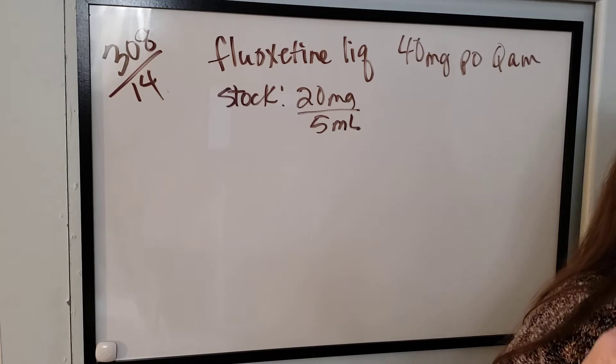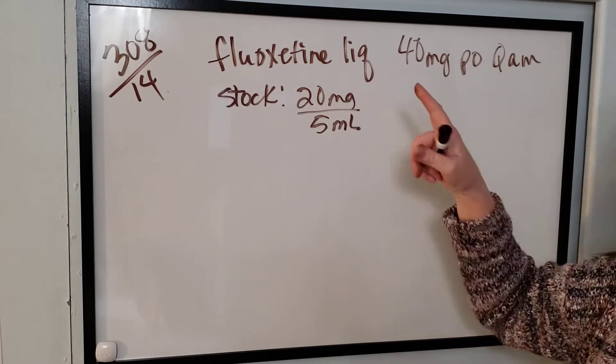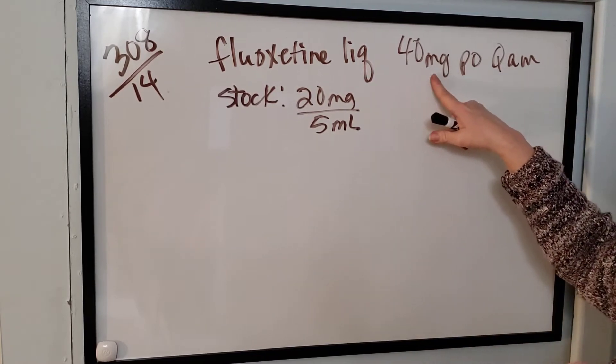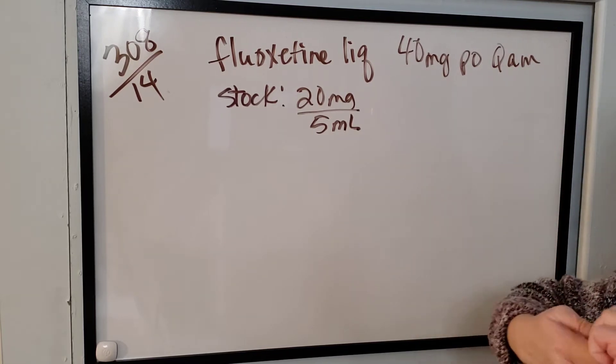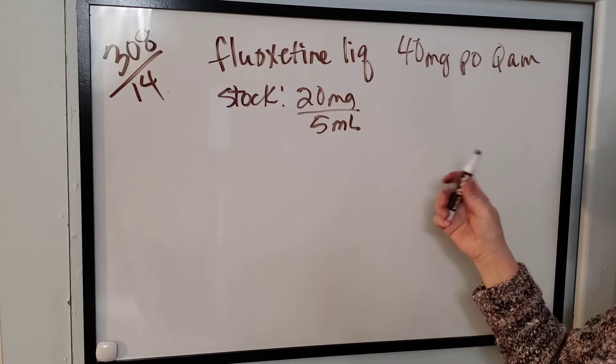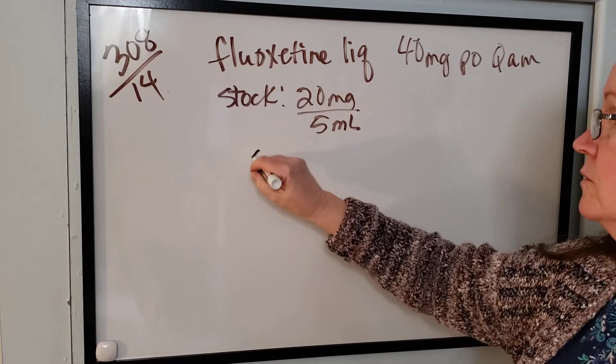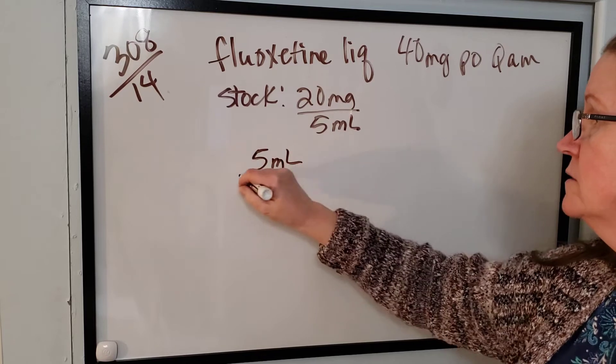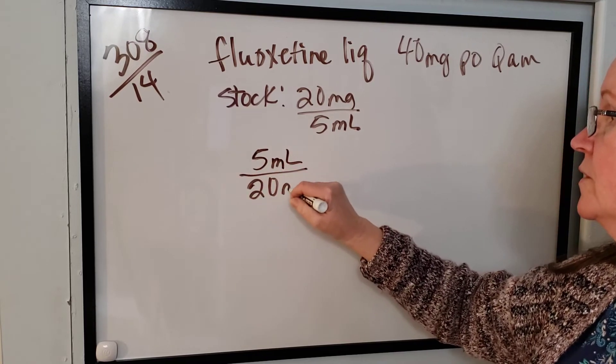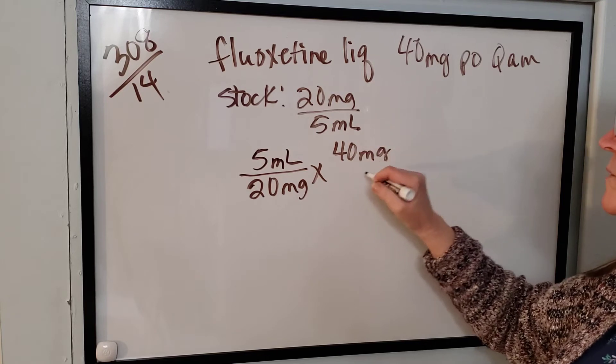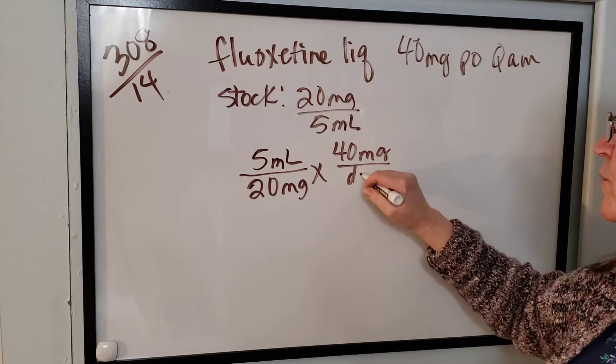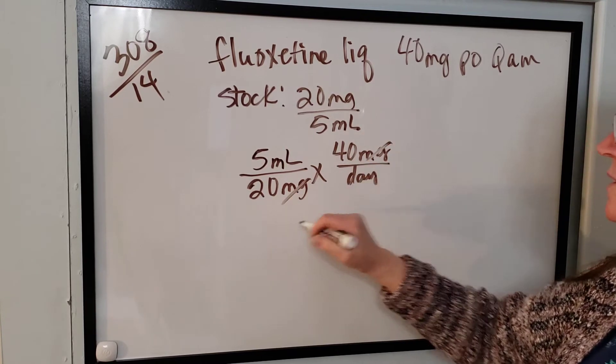These directions say 40 milligrams by mouth every morning, so they're only getting one dose a day. But how many milliliters is this dose? We have 5 mL contains 20 milligrams, and our dose is 40 milligrams. That's per day because they're only getting that once a day.